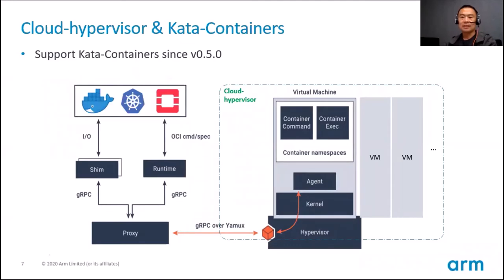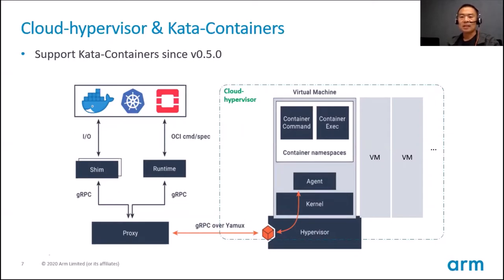Working as a container runtime is an important use case of lightweight VMs today. Cloud Hypervisor can work with Kata Containers to achieve that. Kata Containers is an open source community working to build a secure container runtime with virtual machines. By using Kata, a user feels like using a container, but in fact the workload is isolated by a VM, providing an additional layer of defense. In a pure container stack, typically runC is under the runtime layer, but with Kata it is a VM behind the runtime. Cloud Hypervisor serves to provide virtual machines in which the Kata agent is installed, and the real container workload runs in the VM.